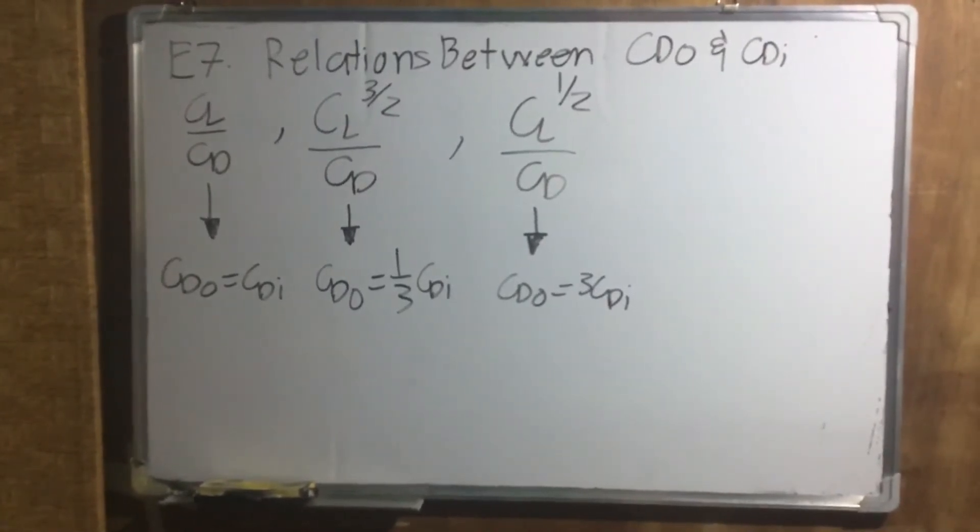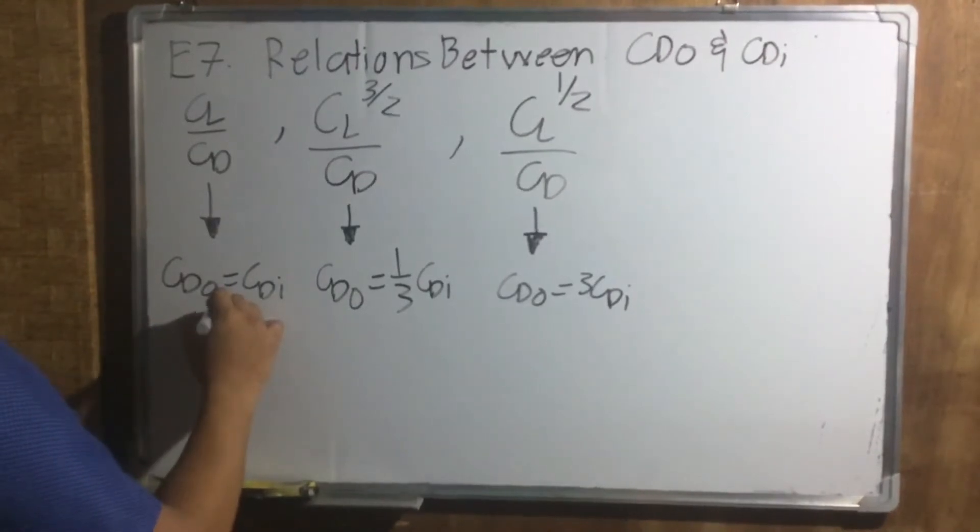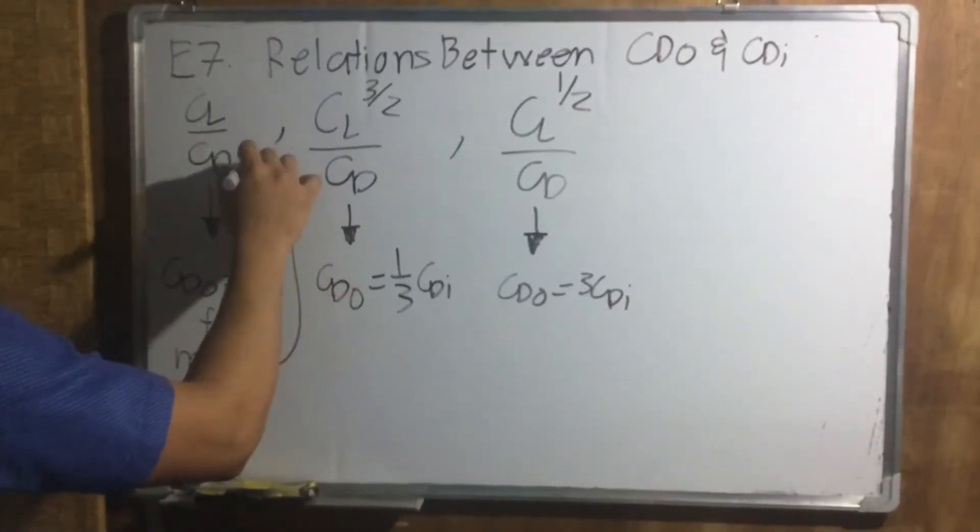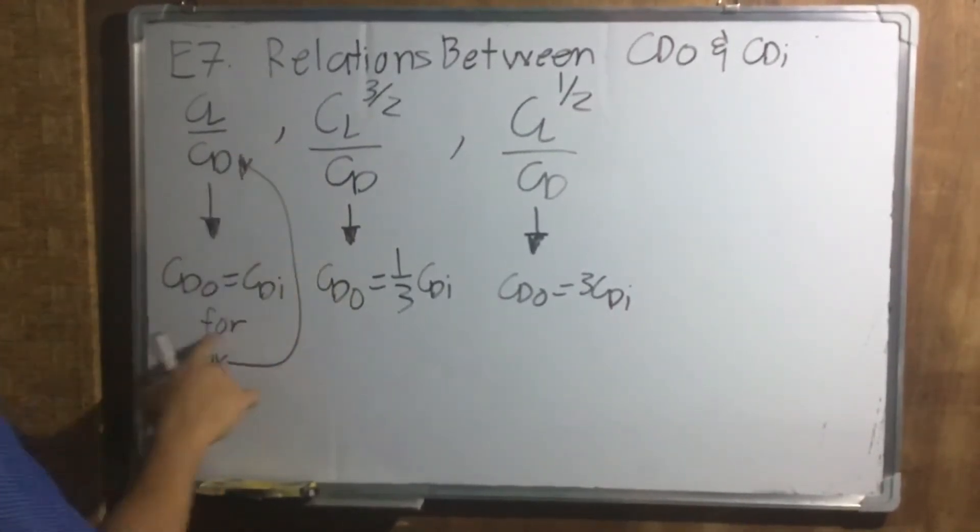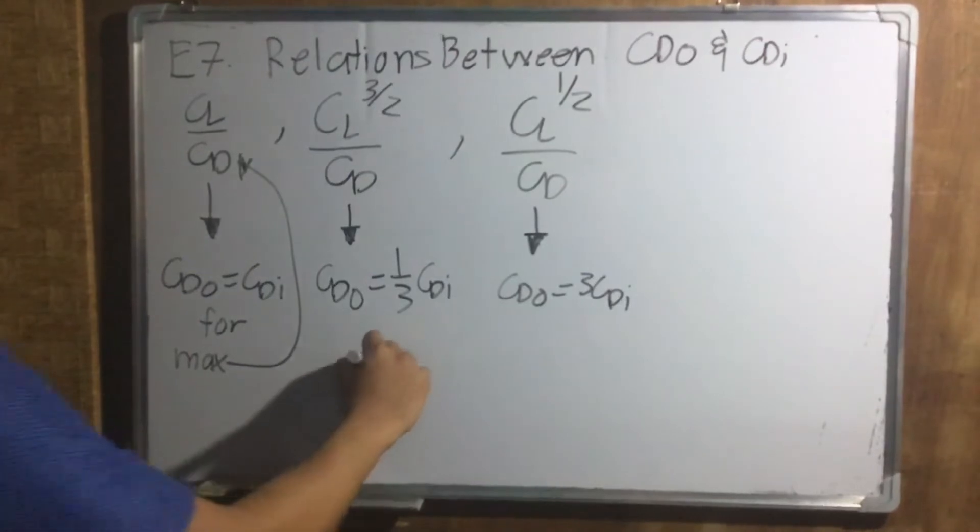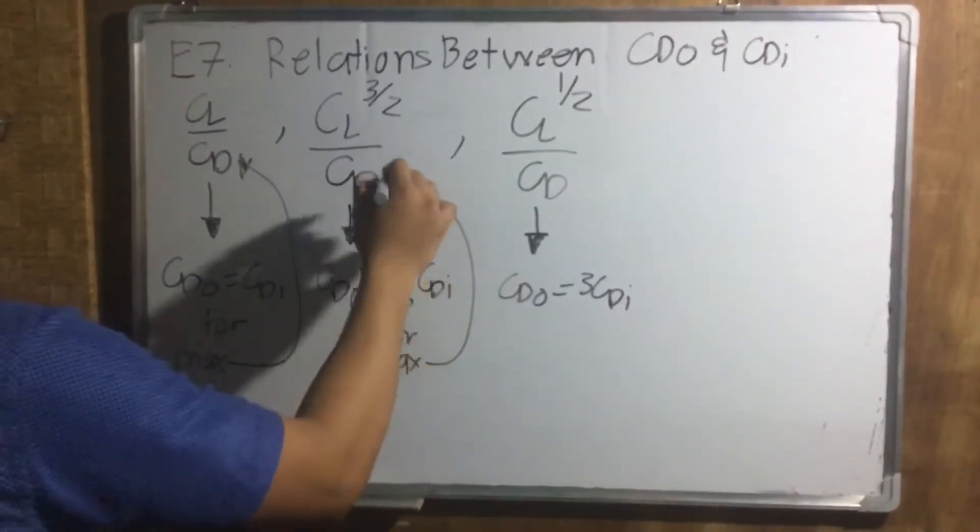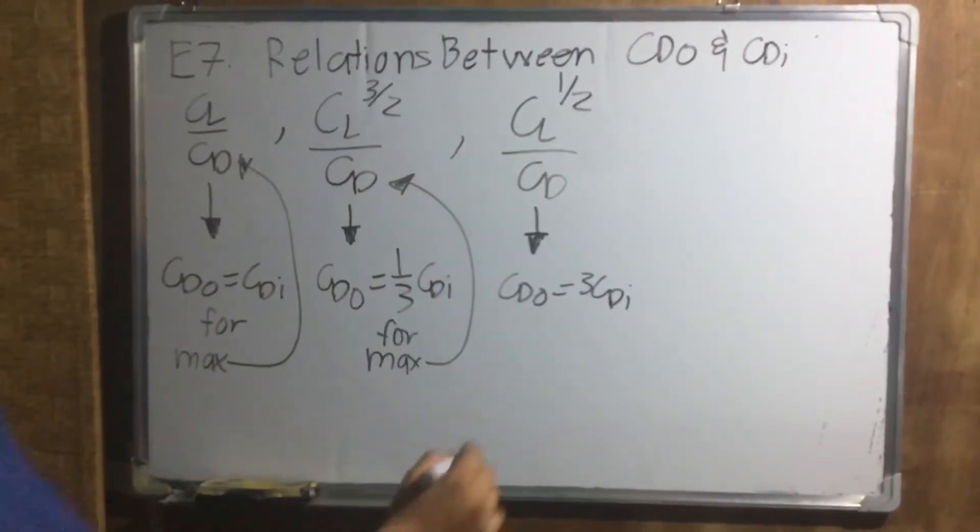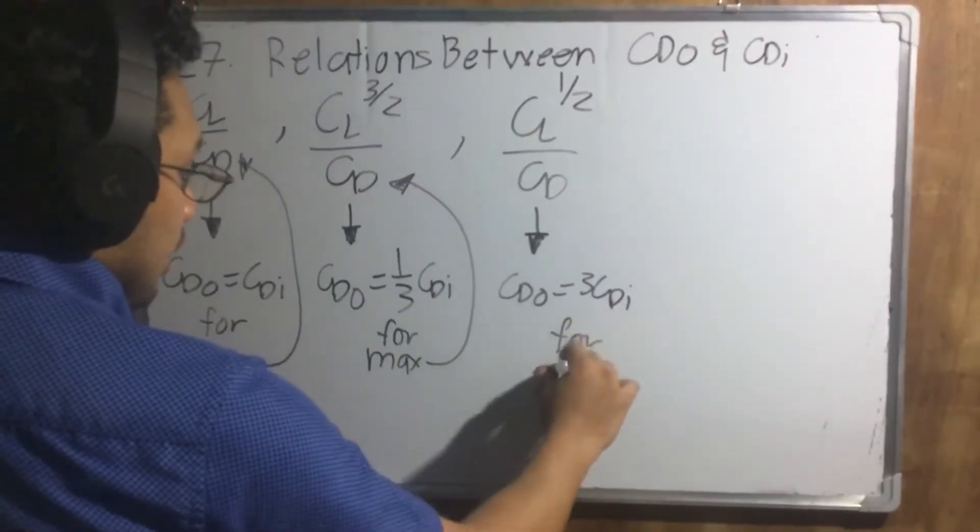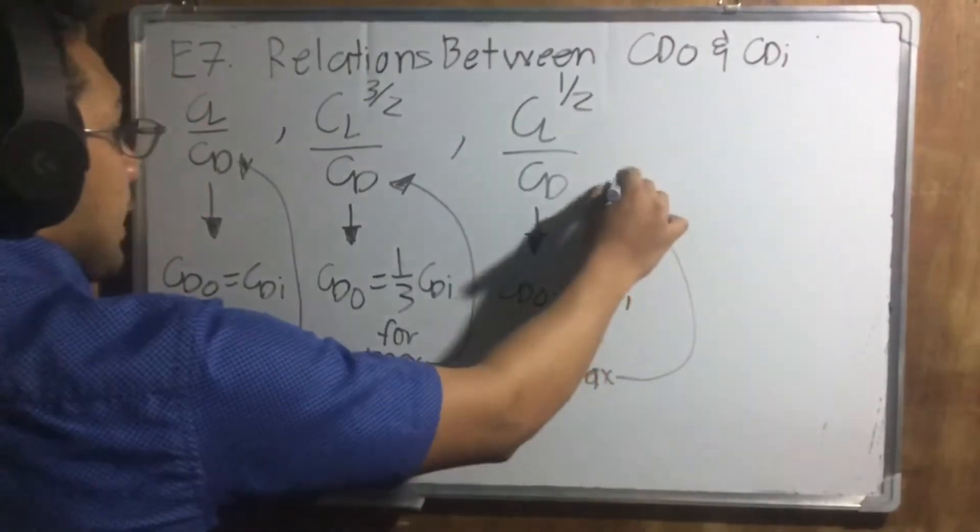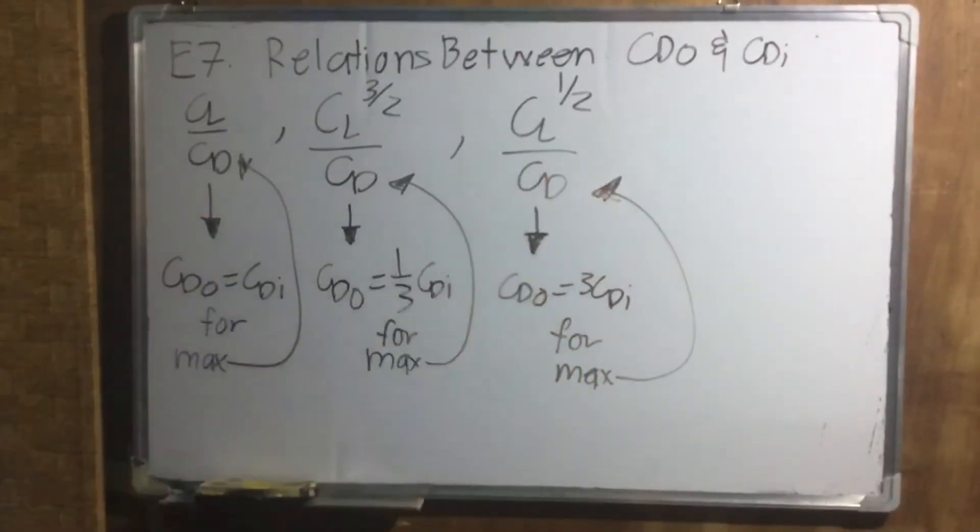This only happens, these three only happen when, when the top is max. For maximum CL over CD. For maximum CL three halves over CD. And for maximum CL one half over CD.